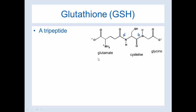So we have the first peptide, glutamate; the second peptide, cysteine; and the third peptide, glycine. So glutathione is a tripeptide, and you now know the three peptides that make up glutathione.